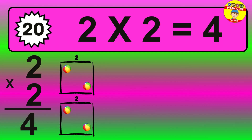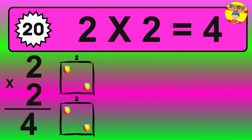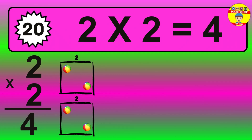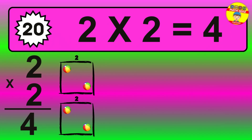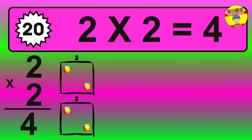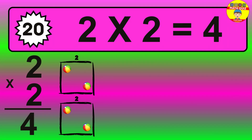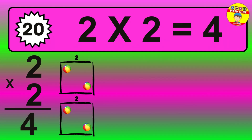Question 20. 2 times 2 equals what? The answer is 2 times 2 is 4. To calculate, we have 2 groups with 2 balls each one. So, how many balls do we have? 4 balls.